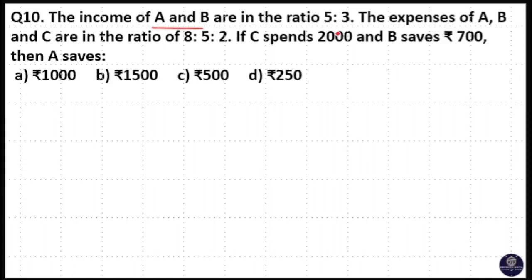The income of A and B are in the ratio 5 is to 3. Expense of A, B and C are in the ratio 8 is to 5 is to 2. If C spends 2000 and B saves 700, then A saves.